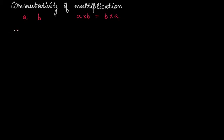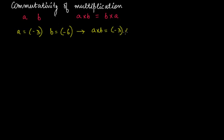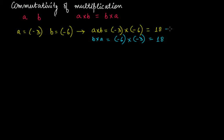Suppose a is minus three and b is minus six. In this case, a times b will be minus three times minus six. Two negative integers are involved, so the product will be positive: 18. What about b times a? B times a will be minus six times minus three, which again gives 18. So the outcomes of a times b and b times a are equal.